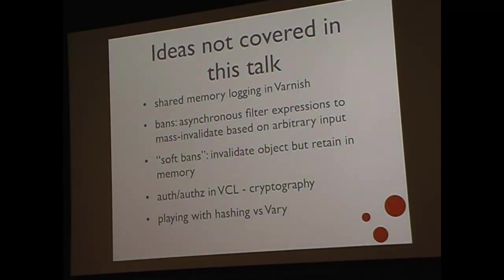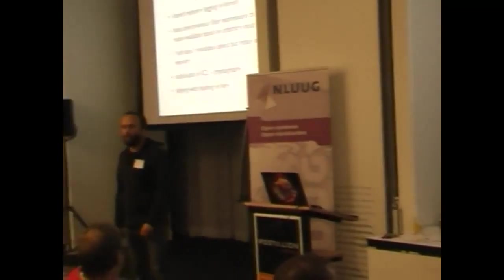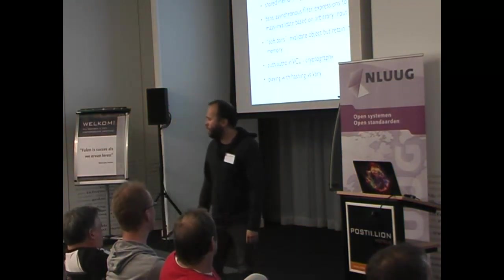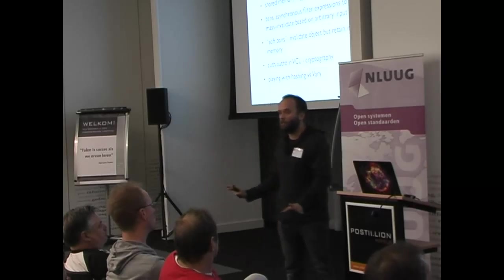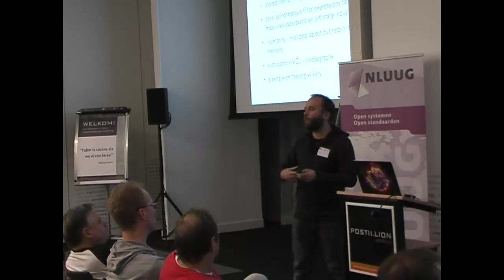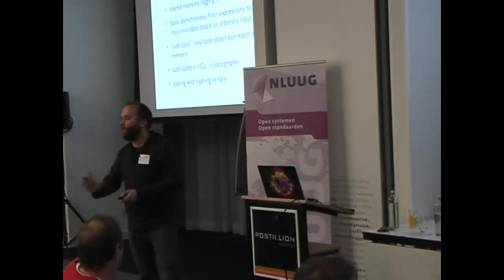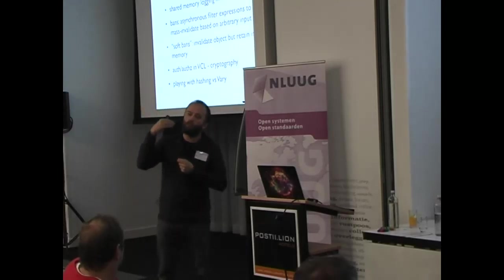Bans are asynchronous filter expressions that mass-invalidate cache entries. If you want to kill all PDFs from the cache because they were generated by an infected PDF generator, or regenerate every PNG, or every URL beginning with /foo/ — you just issue these bans. They take effect immediately. Incoming transactions are compared to the ban list, and if the object is older than the ban, it's matched against the ban before being given to the client.